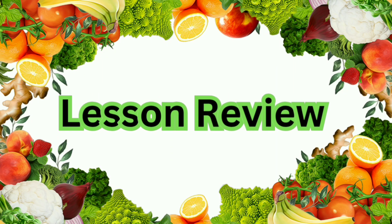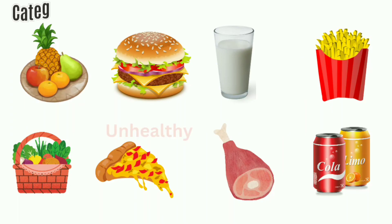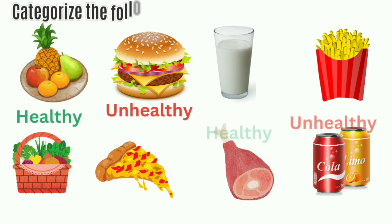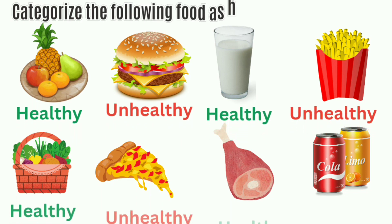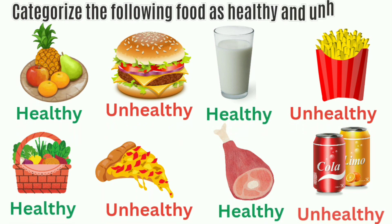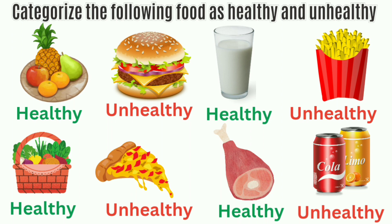Lesson Review: Categorize the following foods as healthy and unhealthy. Fruits is healthy. Burger is unhealthy. Milk is healthy. Fries is unhealthy. Vegetable is healthy. Pizza is unhealthy. Meat is healthy.